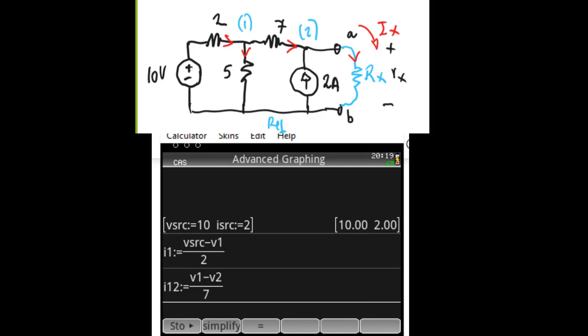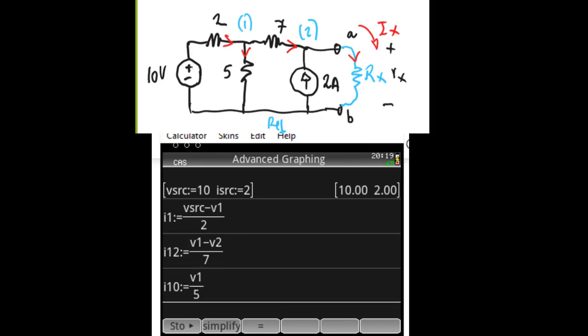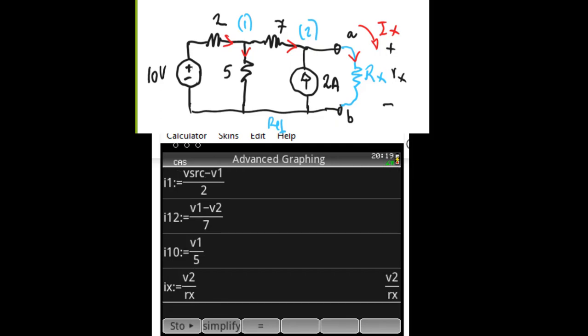The current I1,2 is V1 minus V2 divided by 7. Keep an eye on what I'm doing. Just in case. This is V1 over 5. And if I type something that doesn't make sense to you, it's probably because I made a mistake and you tell me. And there is the current Ix. The current Ix is just V2 divided by Rx, which of course, we don't know what it is. V2 over Rx. Fine.